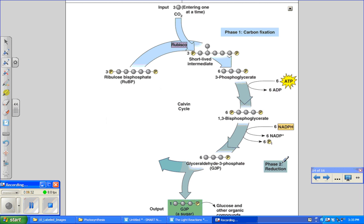And that's the next step of the Calvin cycle, phase two: reduction. During reduction, each molecule of three-phosphoglycerate receives an additional phosphate group from ATP, becoming 1,3-bisphosphoglycerate. Next, a pair of electrons donated from NADPH reduce 1,3-bisphosphoglycerate, which also loses a phosphate group, into G3P, glyceraldehyde-3-phosphate.